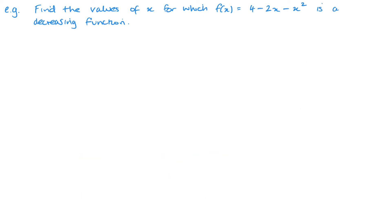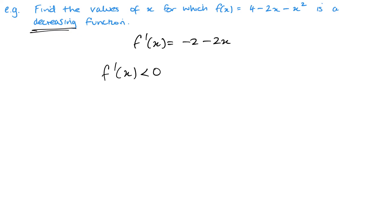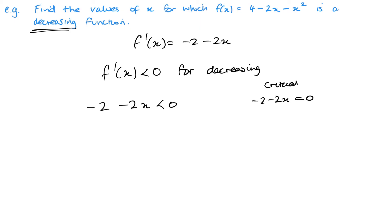Second example — same kind of thing, but this time we're looking for a decreasing function. Start by differentiating: 4 − x² gives −2x − 2. For a decreasing function the derivative is less than zero, so −2x − 2 < 0. Think about the critical values — if in doubt, take it to one side and solve, so the examiner knows what you're doing.